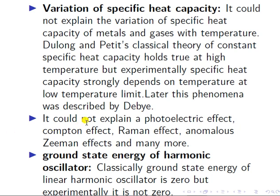Classical mechanics also could not explain the photoelectric effect, Compton effect, Raman effect, Zeeman effect, and many more phenomena. After 1900, there were so many discoveries, and most Nobel Prizes from 1900 to 1925 were related to quantum mechanics. These phenomena are very important; here we are simply indicating what are the limitations or inadequacies.